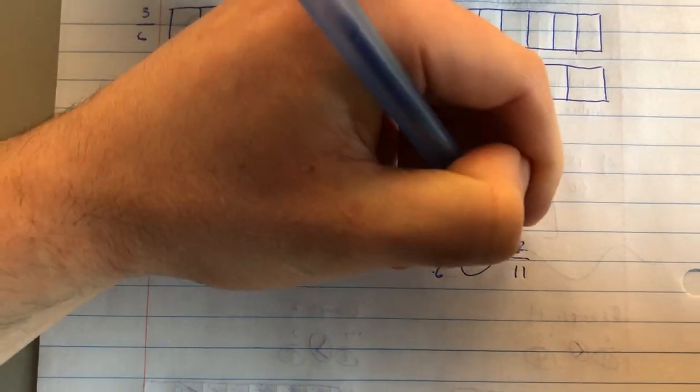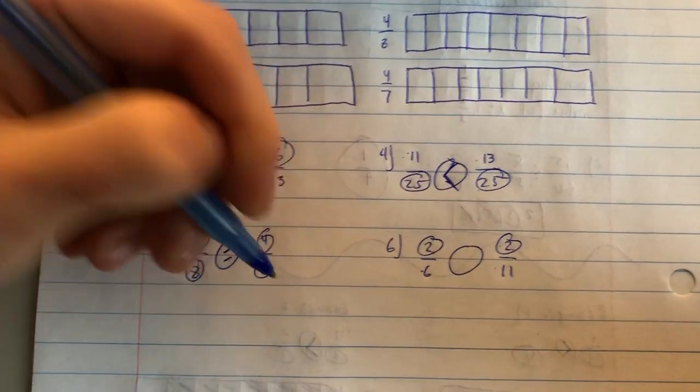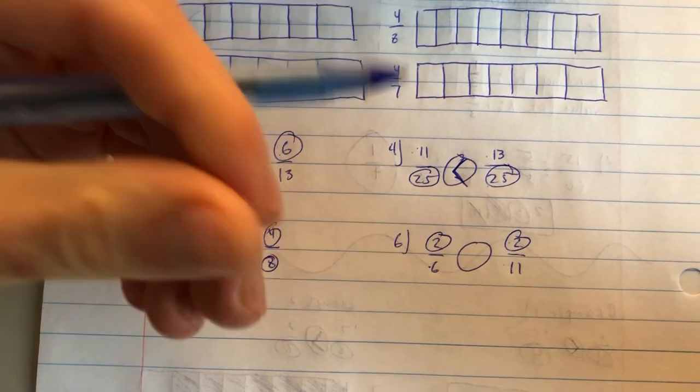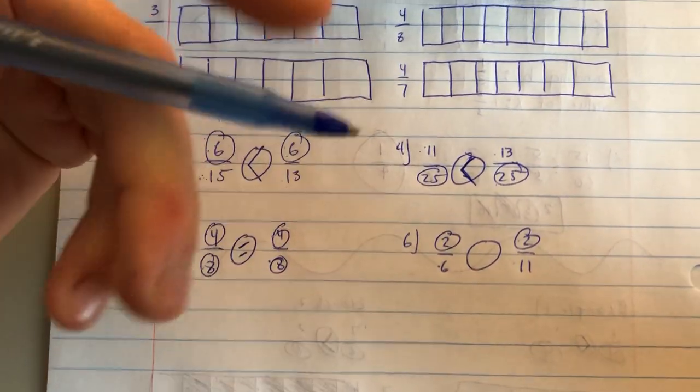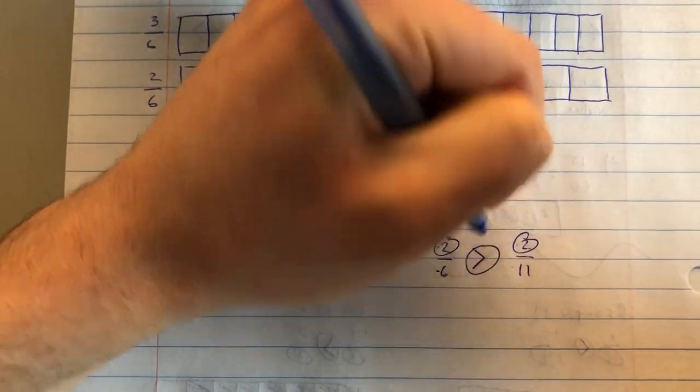For 6, I have 2 sixths and 2 elevenths. My numerators are the same. Again, when my numerators are the same, the smaller the denominator, the larger the fraction. So 2 over 6 is greater than 2 elevenths.